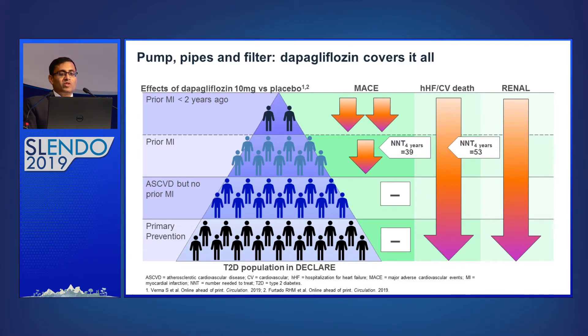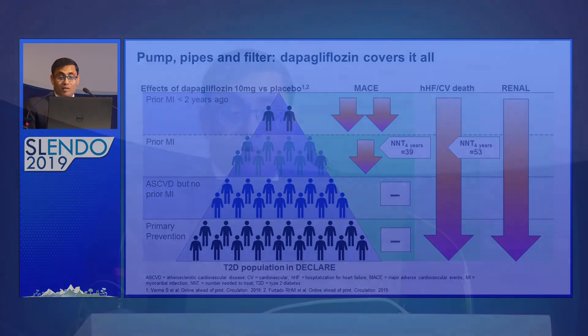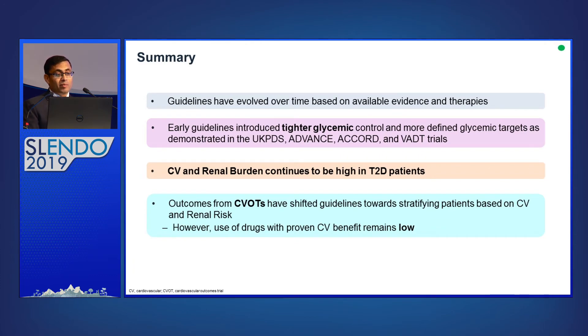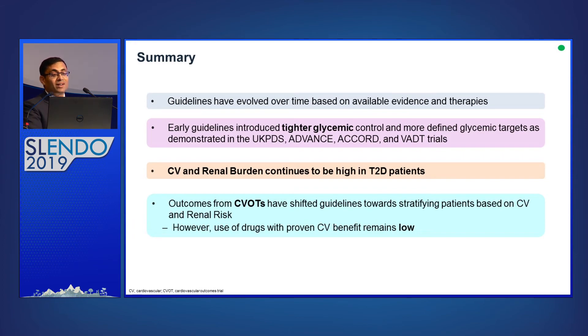The ACC also says SGLT2 inhibitors are recommended for primary prevention. To summarize — pumps, pipes, and filters: the number needed to treat to prevent any adverse cardiovascular event is 39 in a patient with prior MI, and 53 over four years to prevent heart failure. Guidelines have definitely evolved; we have evidence to pick and choose patients who require GLP-1 analogs or SGLT2 inhibitor therapy. Tight glycemic control — though short-term results were not shown to be beneficial — over the long term also has microvascular benefits. Cardiovascular and renal burden continues to be high, and you can do good to your patients by wisely choosing newer classes of agents. Dapagliflozin has definitely shown beneficial effects on MACE, heart failure, and renal endpoints. Thank you for your patient listening.